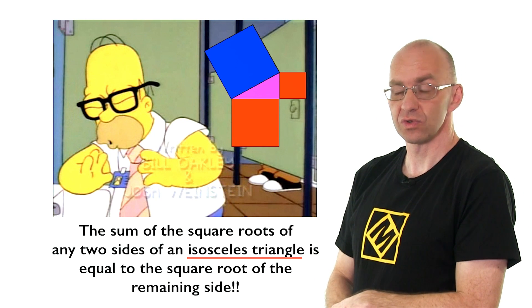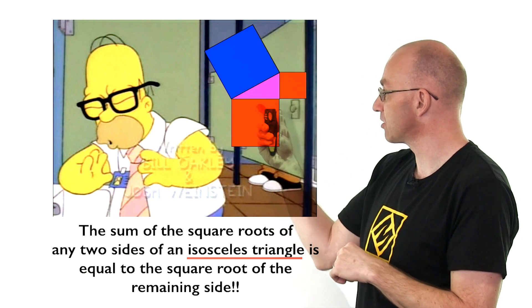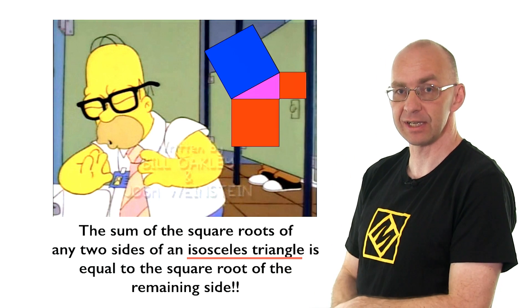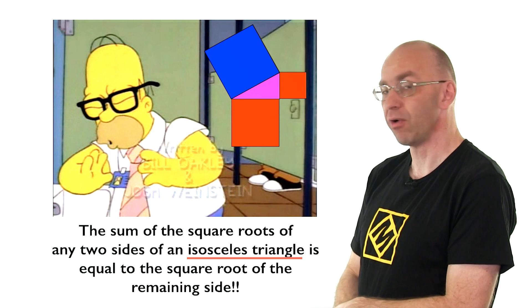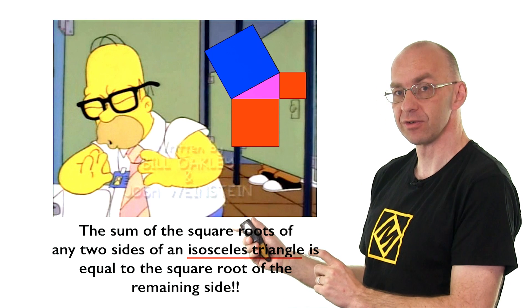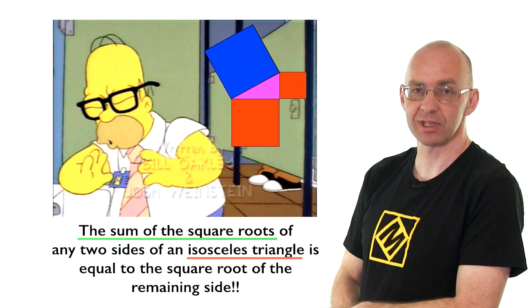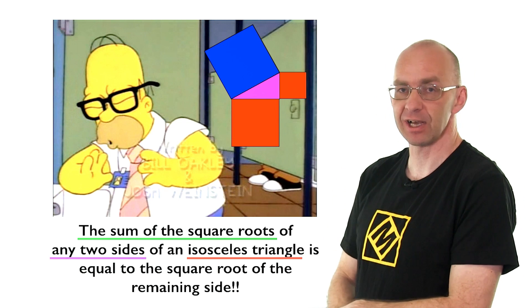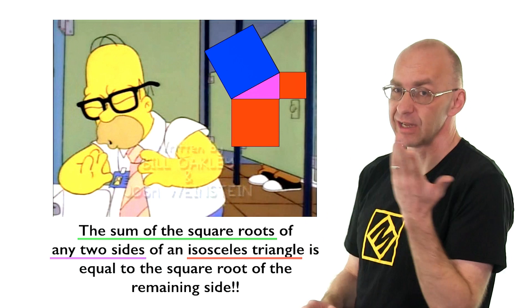Any two sides? Any two sides, yeah, that's fine. So any two sides, it's got to be those two here in Pythagoras. And then there's one more, which is of course, oh yeah, the sum of the square roots. So sum of the square roots doesn't work. Any two sides doesn't work.